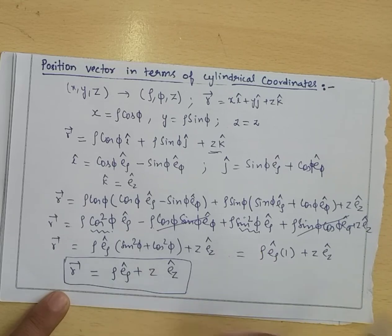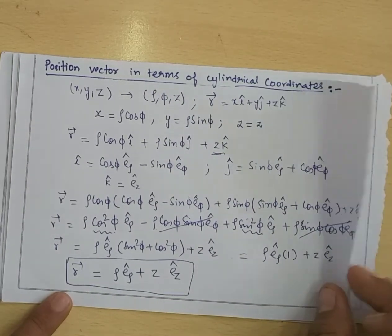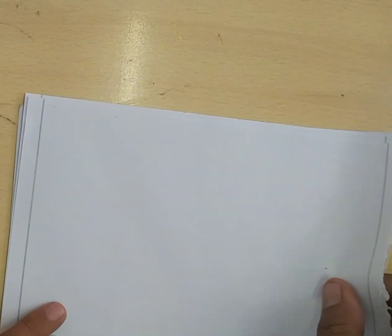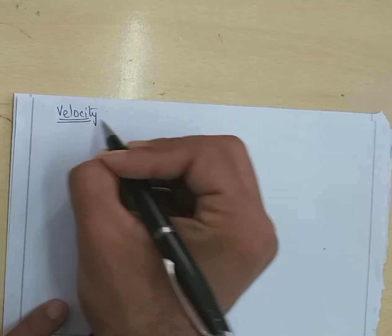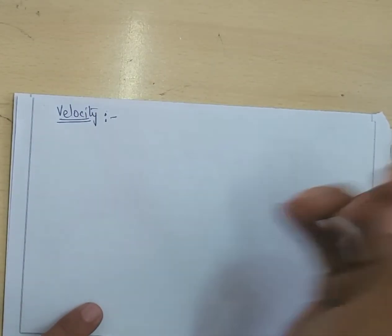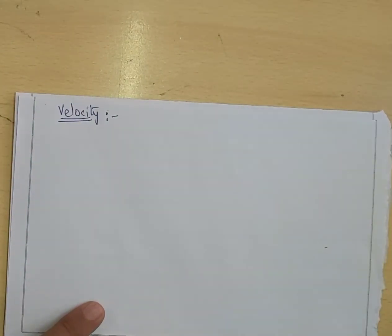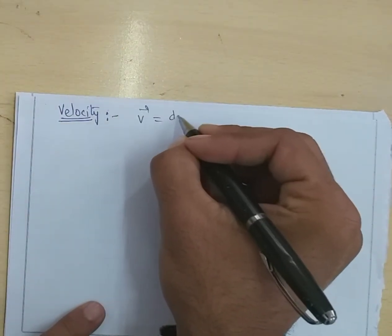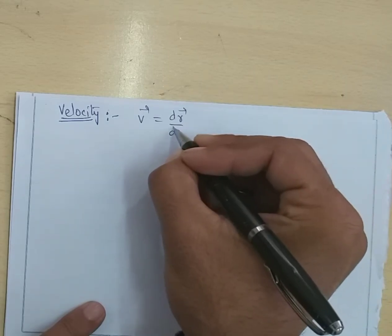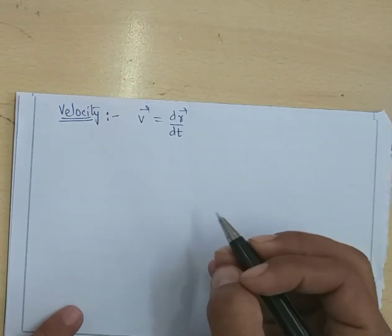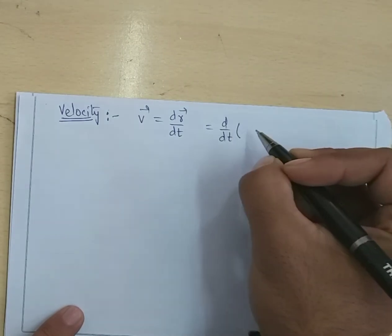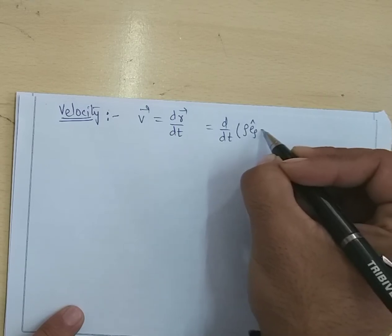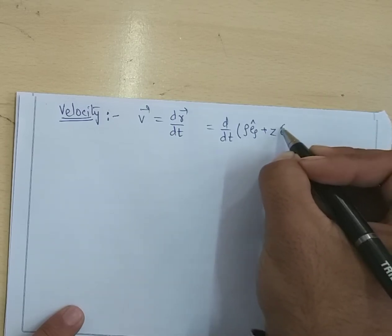Now if we talk about velocity in cylindrical coordinates — velocity is the rate of change of displacement, so we differentiate: V = d/dt of [Rho·E_rho-cap plus Z·E_z-cap].